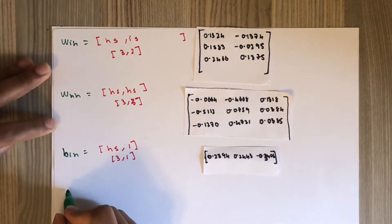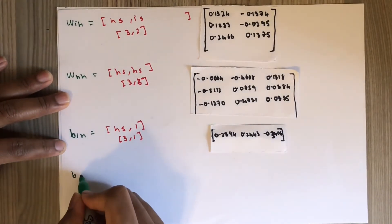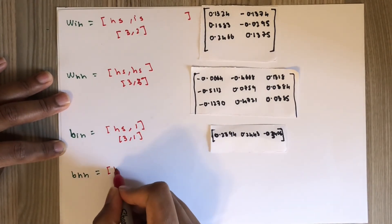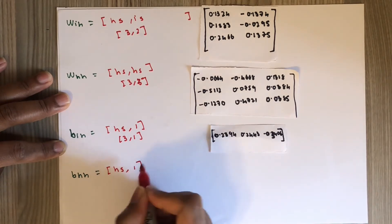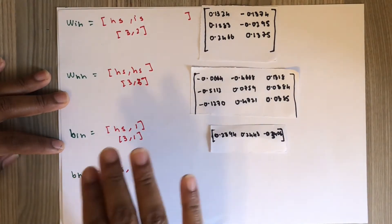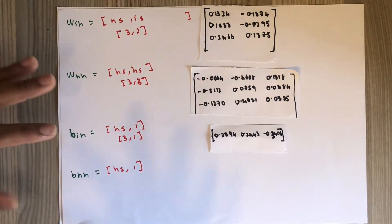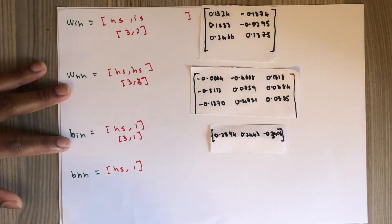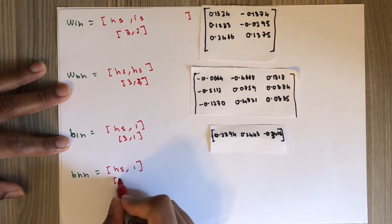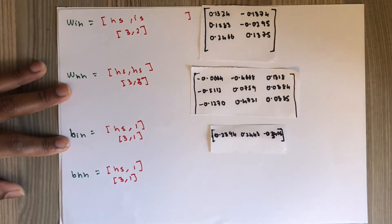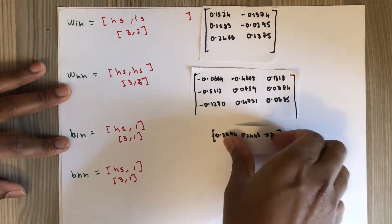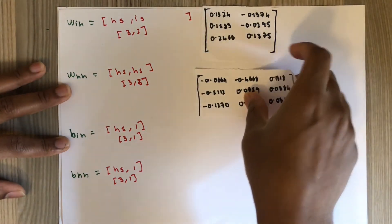The bias related to the hidden — we always have a dimension of hidden size. When I say always, sometimes it might not be one, for example when the number of layers in the network is two. But usually when you have a one-layer network that is not bi-directional, it is HS by one — three by one in this case. As an example, we can have something like this. Now let's remove this and start the calculation.